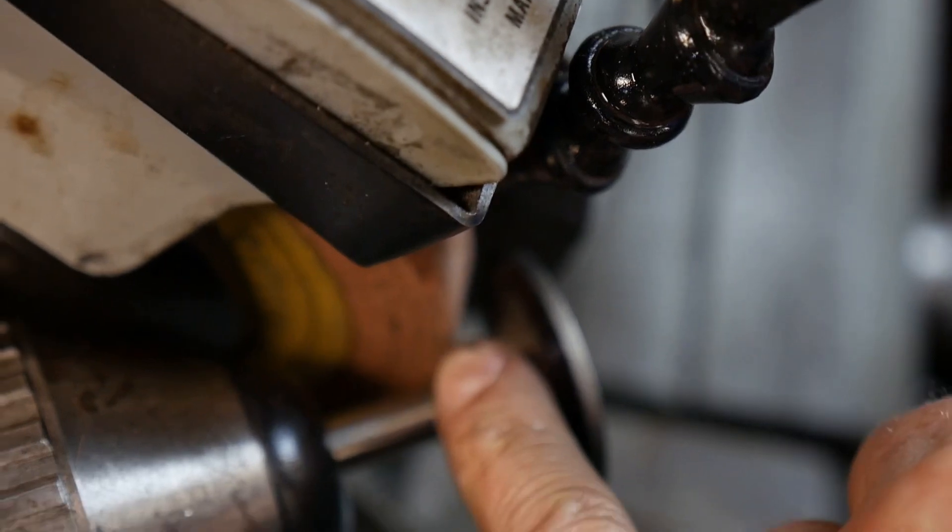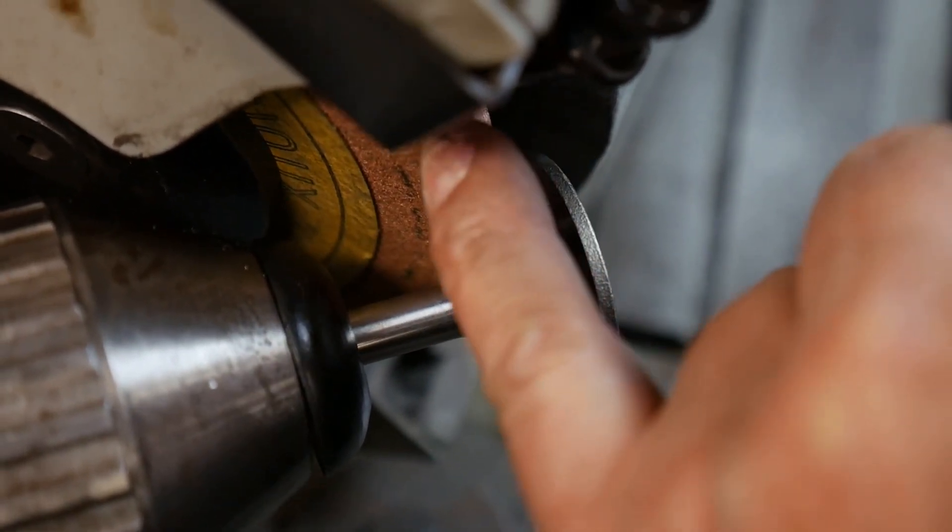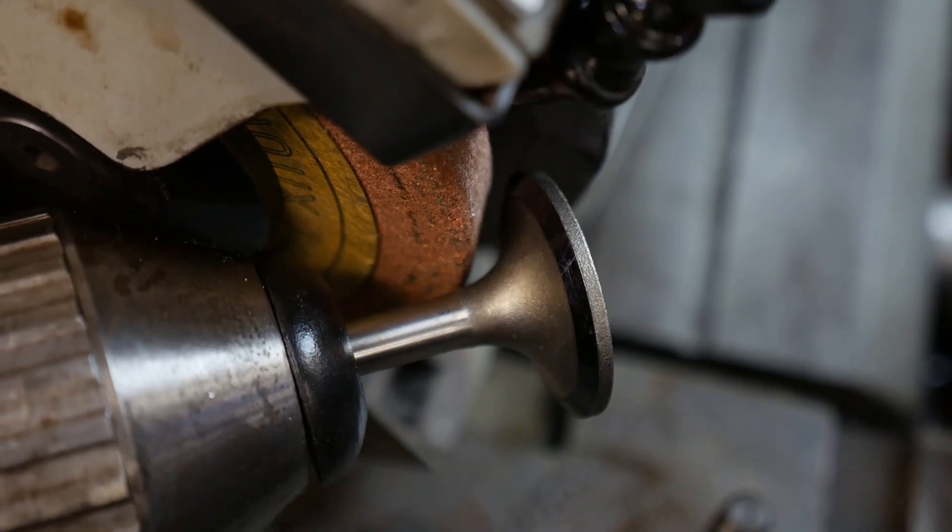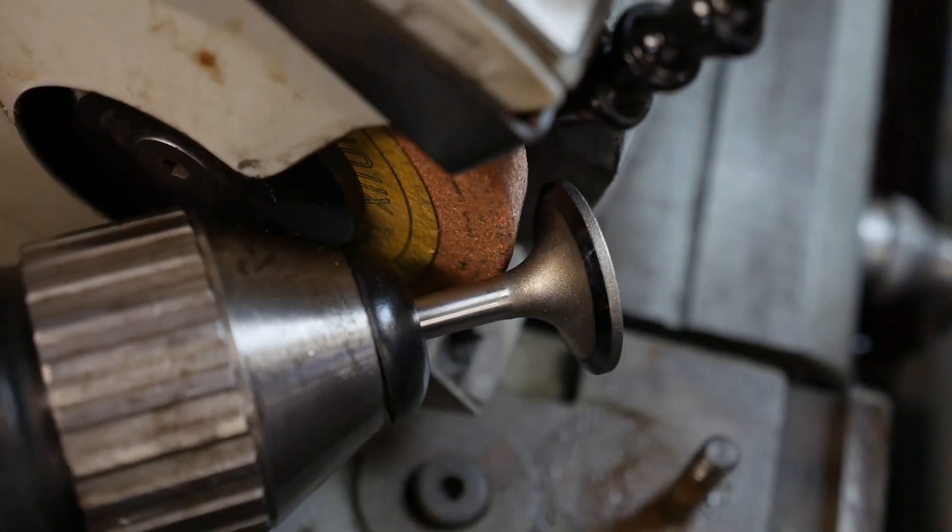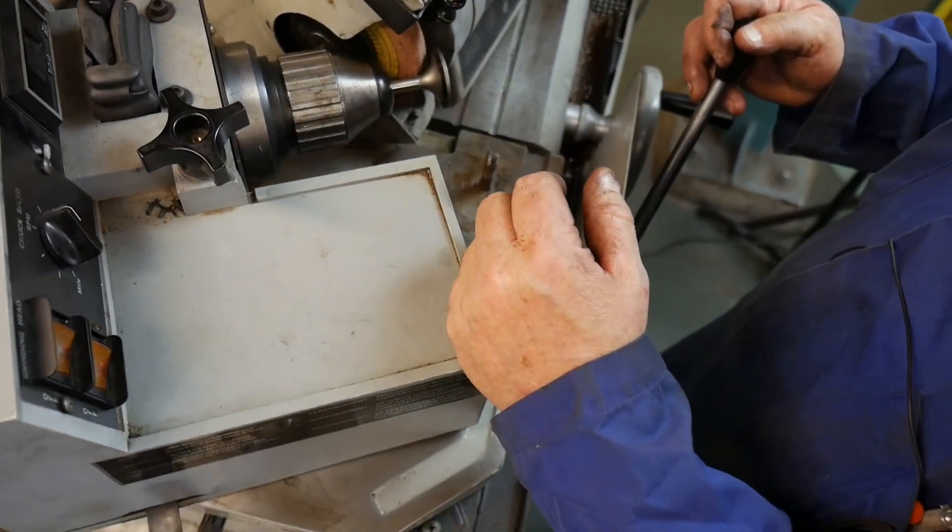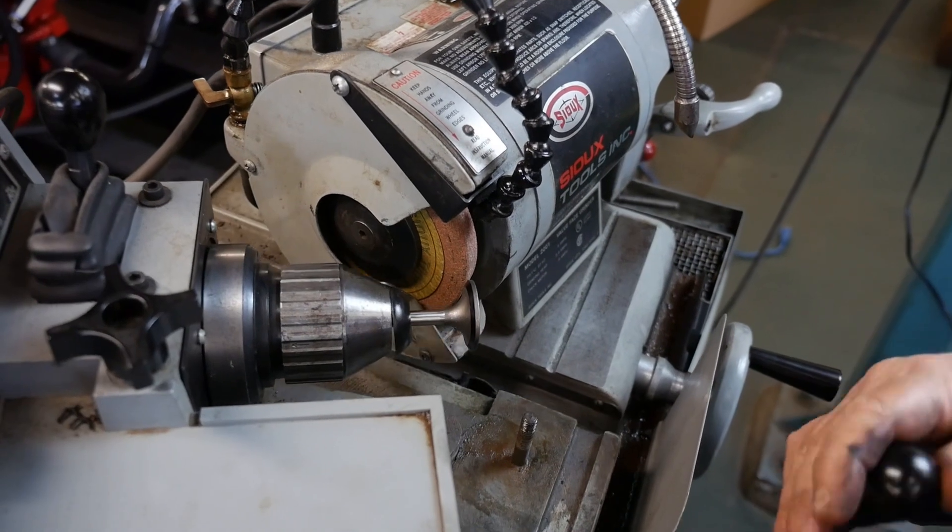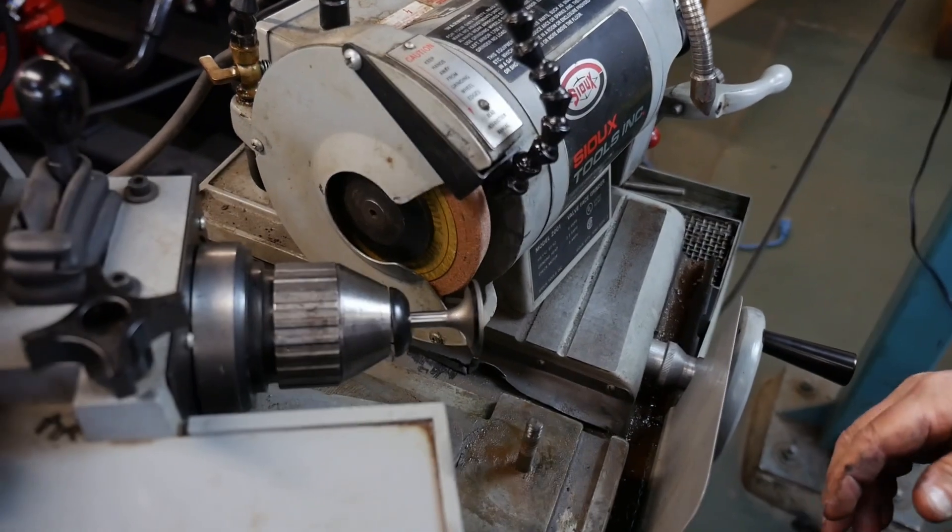It's extremely important that this edge of the stone does not contact the stem. If that edge puts a notch in that valve head, that valve will fail in service and cause catastrophic engine failure. If that happens, that valve is only good for a tent peg and nothing else. So now we're safe, we can't hit it, we're good to go. I'm going to turn on the machine and get my coolant flowing.